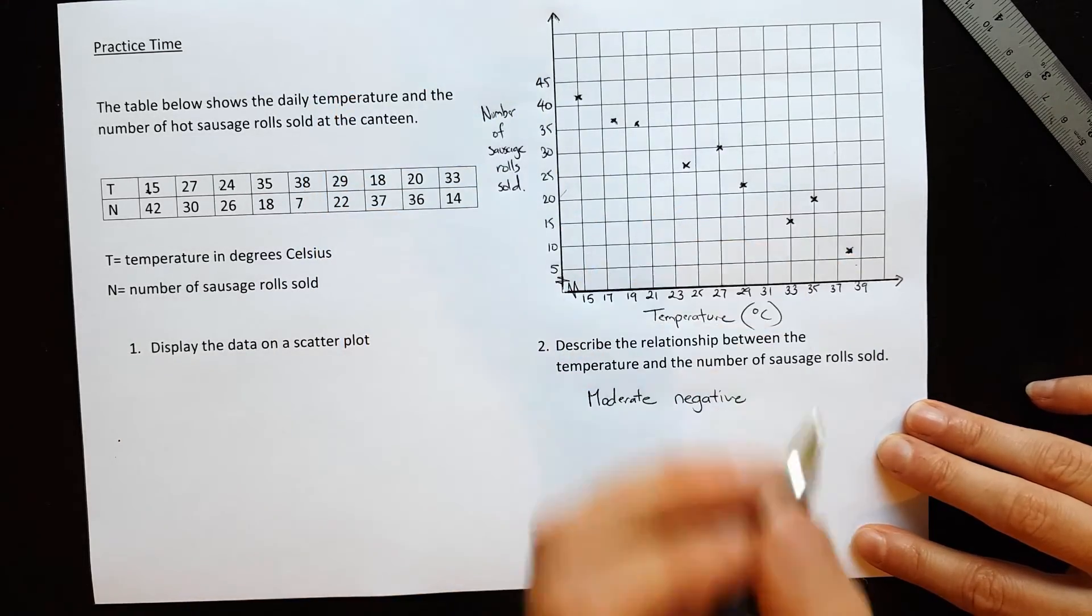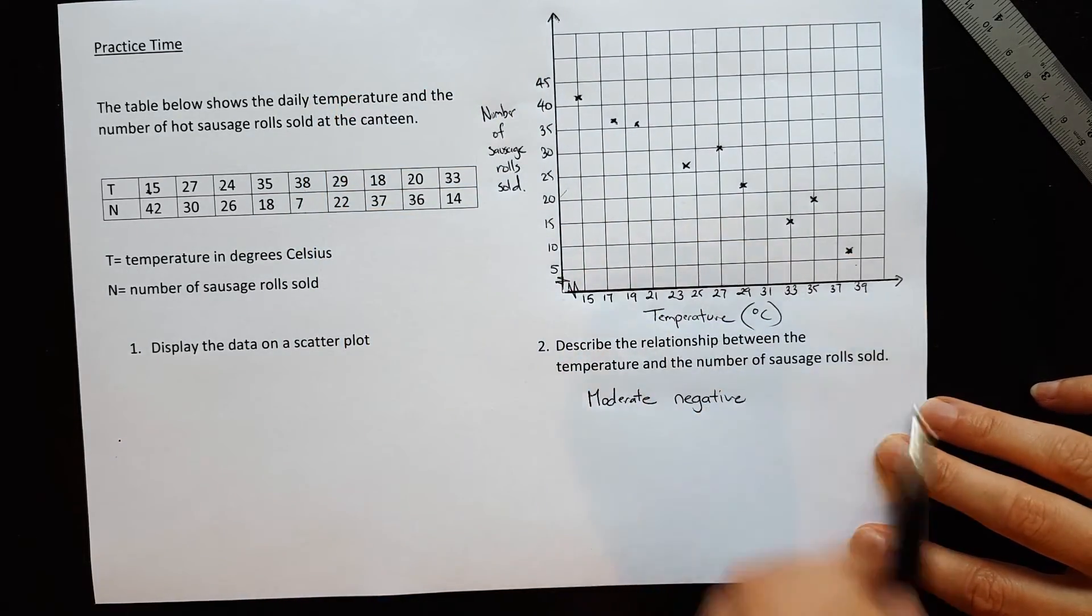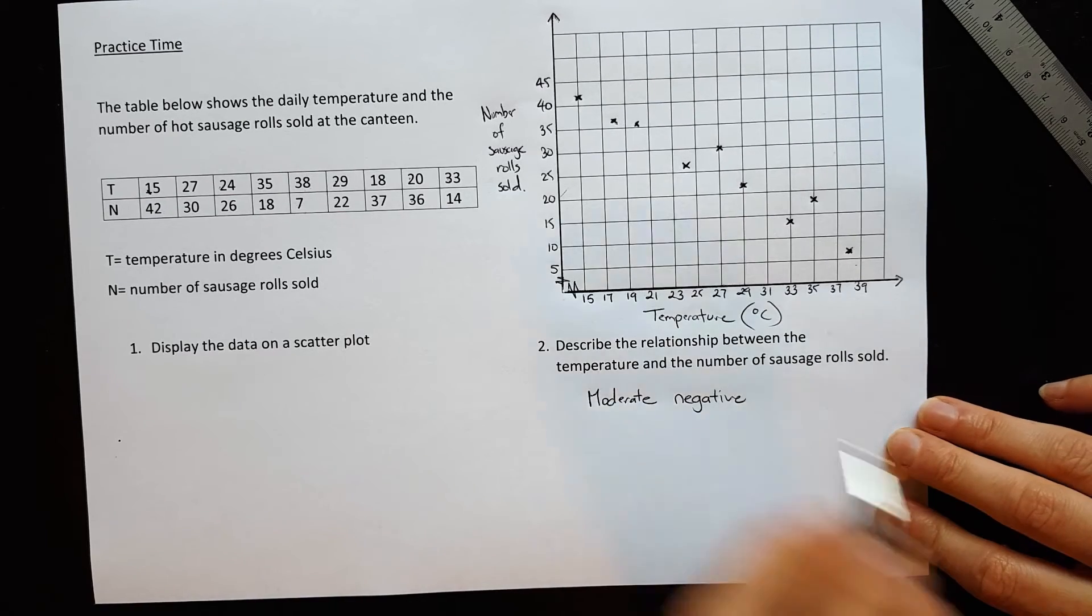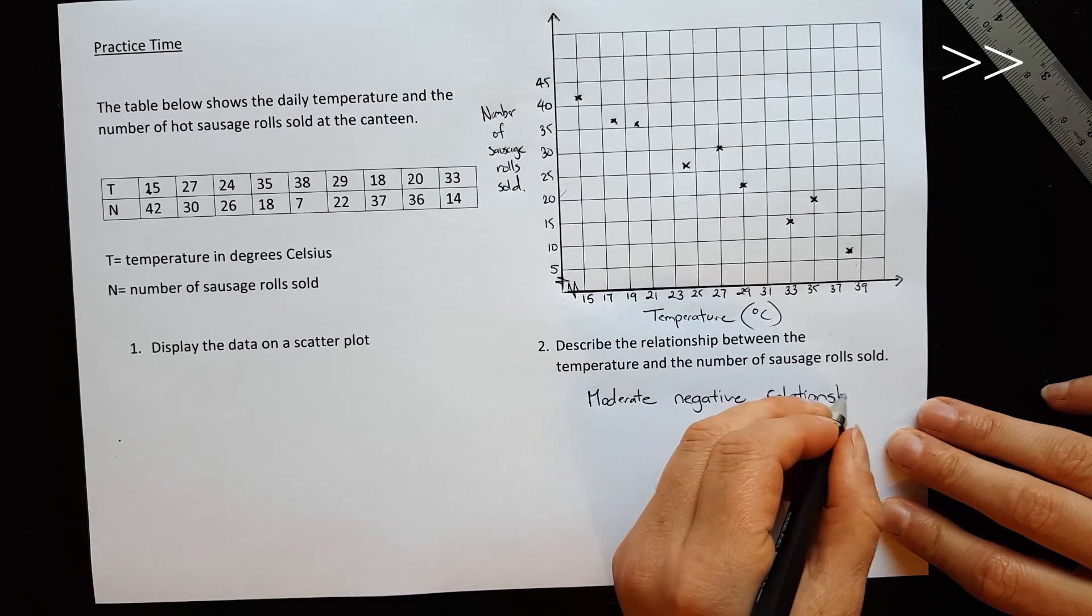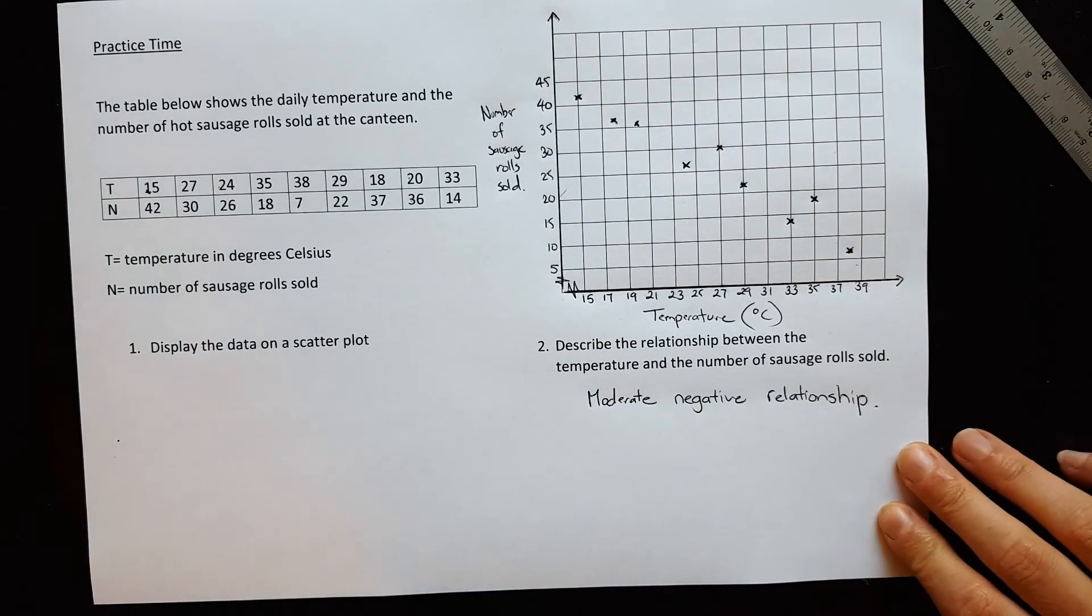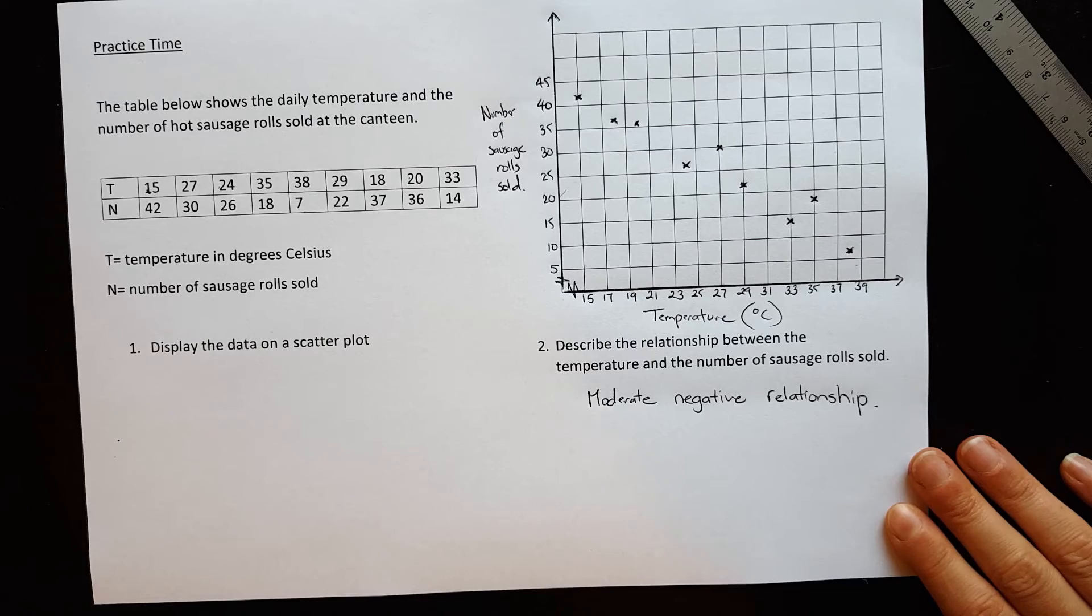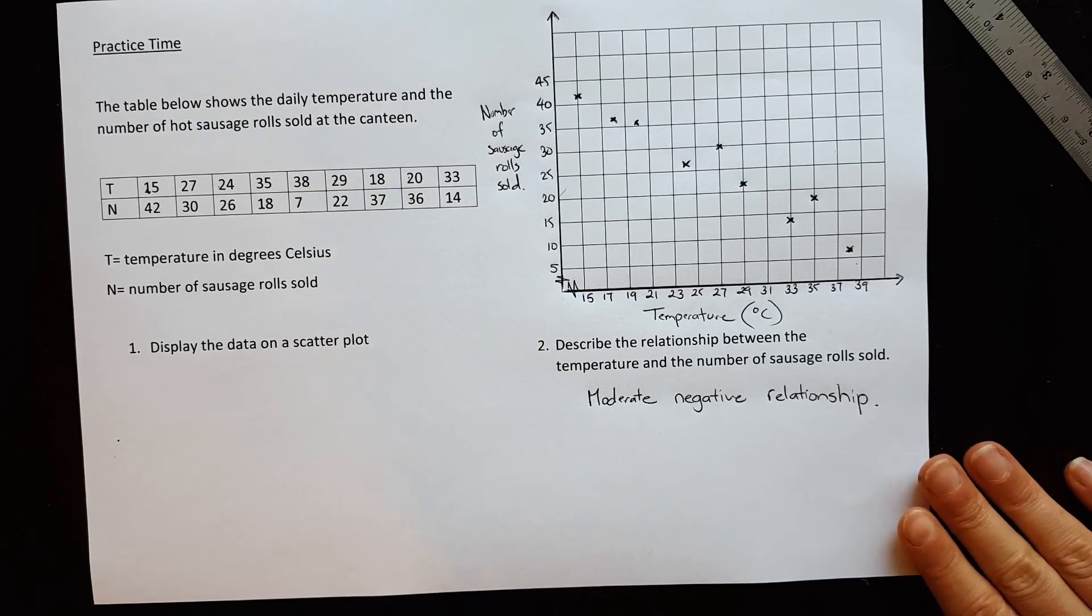Because the number of sausage rolls is decreasing as the temperature is increasing, so it's a moderate negative relationship. That's the end of our lesson today. Keep practicing, I'll see you next time. Bye.